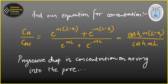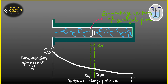Substituting these values gives the concentration ratio, which tells us the progressive drop in concentration as reactant A moves into the pore. This ratio C_A/C_As contains the mL term, which is an important parameter. It shows the concentration at the surface and the reduction as you move along the pore.